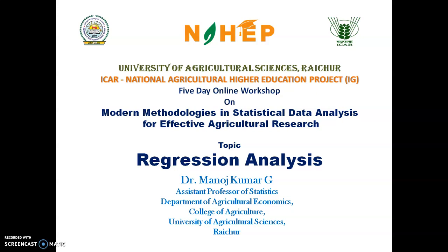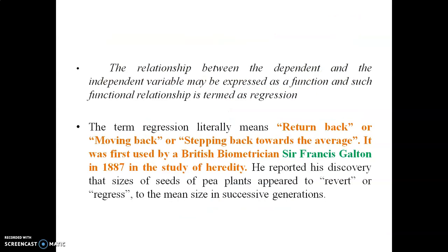By knowing cause and effect relationship, we may be interested in estimating or predicting the value of one variable given the value of another. The relationship between dependent and independent variables may be expressed as a function, and such functional relationship is termed as regression. The term regression literally means return back or moving back or stepping back towards the average. It was first used by British biometrician Sir Francis Galton in 1887 in the study of heredity. He reported that sizes of seeds of pea plants appeared to revert or regress to the mean size in successive generations.